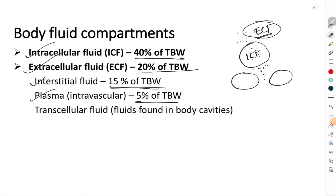Now what is plasma? Plasma is the fluid part of the blood. So that means plasma should be present in the blood vessels. That's why it is called as the intravascular portion of the extracellular fluid.